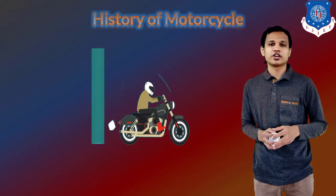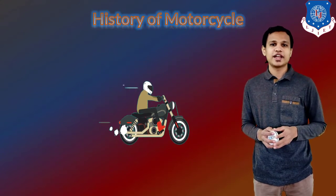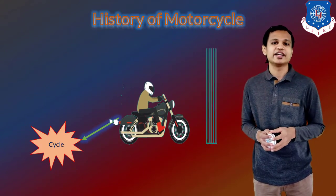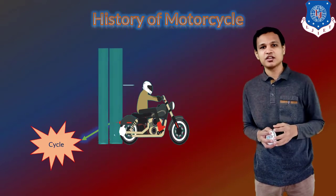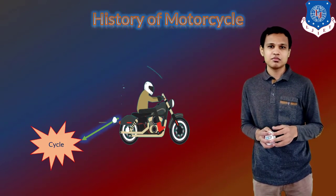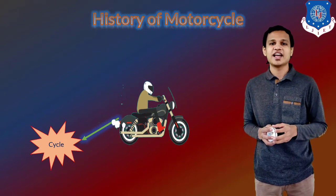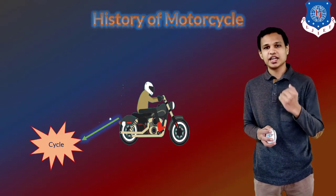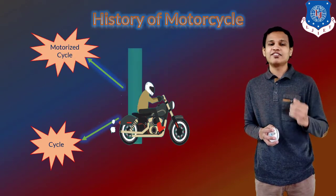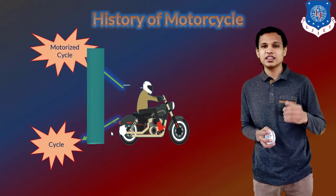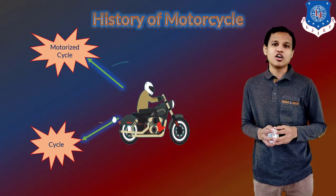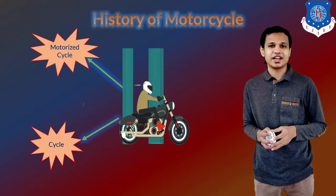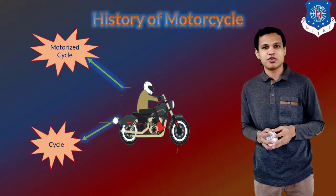Next is the history of the motorcycle, also better known as bikes. In the case of bikes, the first innovation that can be mentioned is the cycle — the bicycle. By applying the pedals, we can run our bicycle, and that was the first innovation related to our motorcycle. After that, the second thing is the motorized cycle. In that case, the normal bicycle was run with the help of a motor, and that could run automatically. The motor ran with the help of mechanical power.